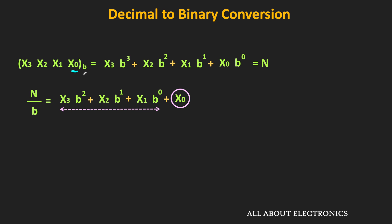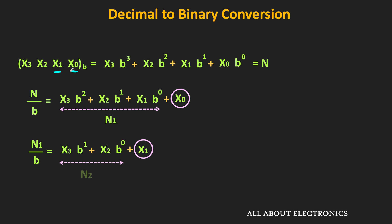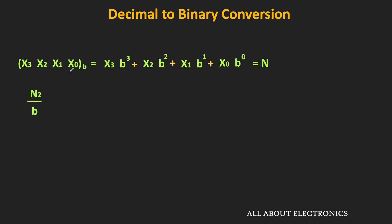Let's say the remaining number is equal to n1. If we further divide n1 by the factor of b, then once again this remainder is the next digit — equal to x1. The remaining number is n2. If we divide n2 by the factor of b, the remainder is x2. And the remaining number is n3. Dividing n3 by b gives x3, which is the most significant digit. So by successively dividing the decimal number by the factor of b, we can find the equivalent number in the base B number system. Similarly, by successively dividing by 2, we can find its binary equivalent.